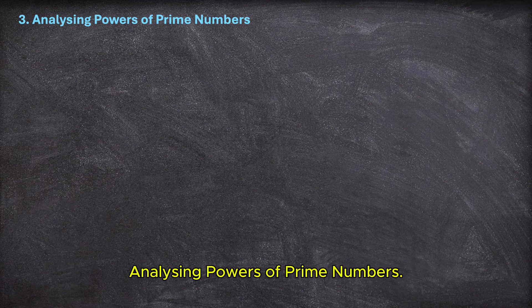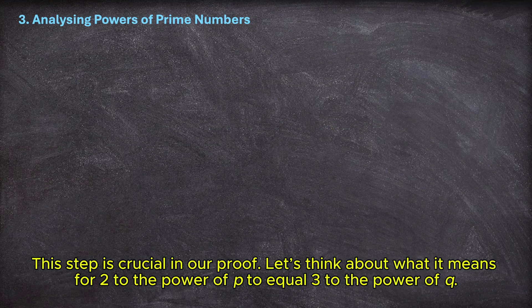Analyzing powers of prime numbers. This step is crucial in our proof. Let's think about what it means for 2 to the power of p to equal 3 to the power of q.